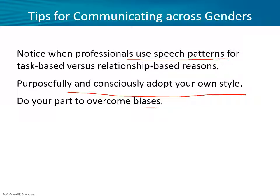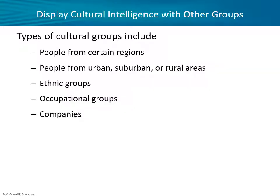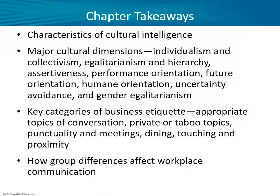Try to overcome these biases — it seems like we'll never get over some of them on both sides, but to the extent you can make some difference, go for it. Displaying cultural intelligence with other groups: people from certain types of cultural groups include people from certain regions. People from urban, suburban, or rural areas — you can definitely see cultural differences there. Ethnic groups, occupational groups, and companies also all factor in.